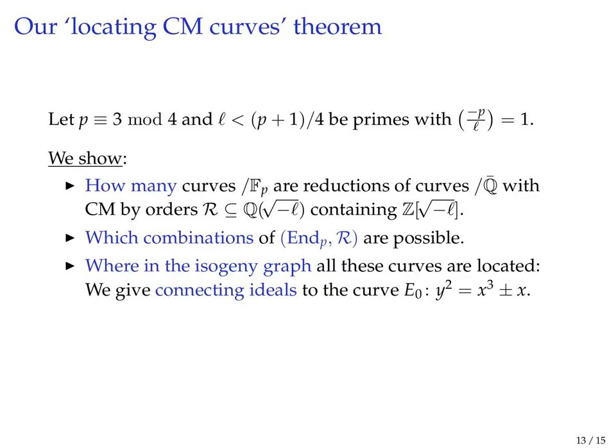Based on all this we came up with the main theorem of our paper. It structurally looks like this—I'm not showing all the details but you can read up in our paper. For this CM reduction scenario where you take a CM curve and reduce it modulo p to get a supersingular elliptic curve, we tell you exactly how many curves over F_p there are that are reductions of these curves, which combinations of F_p endomorphism ring and the reduced CM ring are possible, and finally—perhaps the most important thing cryptographically—where exactly in the isogeny graph all of these curves are. We tell you exactly how to get there from this special starting curve. We formulate this theorem only for p equals 3 mod 4 because that's the interesting case for CSIDH, but similar results are likely possible for p equals 1 mod 4.